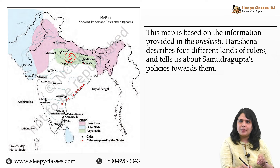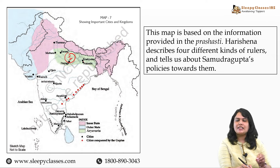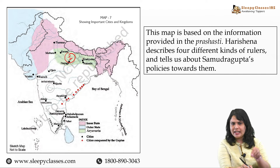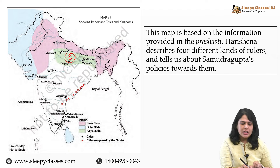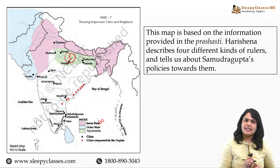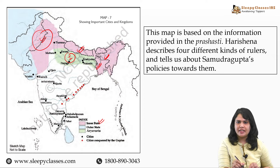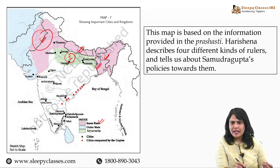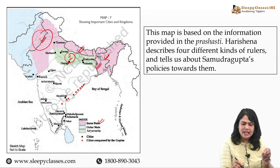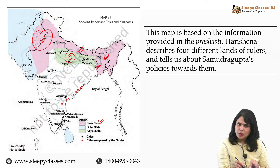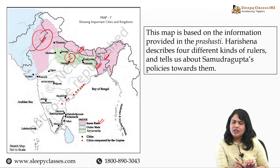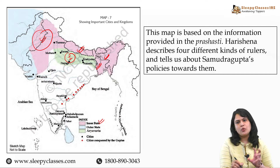First, aapka jo middle Gangetic plains hai aur upper Gangetic plains hai, in areas ke andar jo weaker powers hain, unko hara karke inki territories ko directly Gupta control ke andar le liya gaya. Next hai the inner states - jiske andar agar aap dekhen, toh Assam, Bengal, Nepal, and northwest mein jo gana sanghas the, woh aate hain. Aur aap yahan pe dekhenge ki inko bhi haraaya gaya. They were forced to submit before the Guptas, and they agreed ki ye time to time tribute pay karenge, court attend karenge, aur Samudragupta ke jo orders hain, unhein bhi obey karenge.